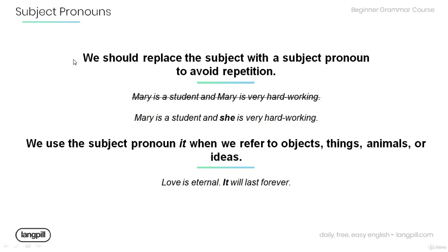We should also replace the subject with a subject pronoun to avoid repetition. For example: 'Mary is a student and Mary is very hard-working.' The repetition of the proper noun 'Mary' should be avoided. We should say something like: 'Mary is a student and she is very hard-working.'